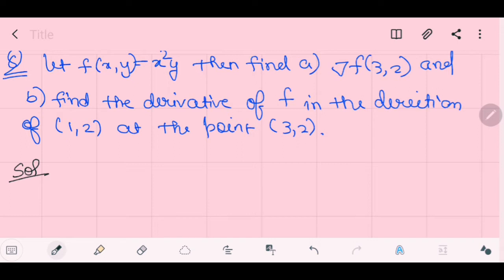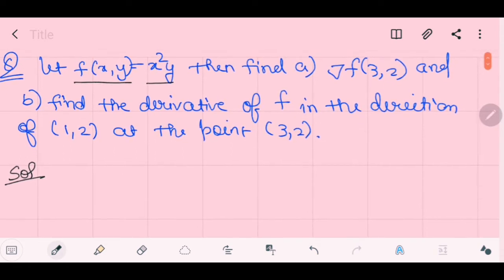In this case, if you see, here one function is given to you, an equation which is in terms of two variables x and y. The equation is x²y and you need to find out two things. Firstly, the gradient of that function at point (3, 2). And you need to find out the directional derivative of that function in the direction of this point at this point.